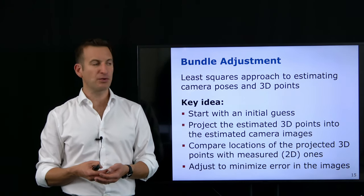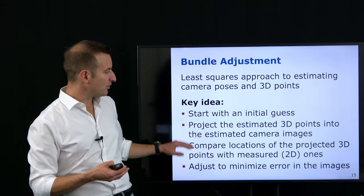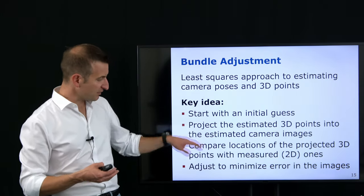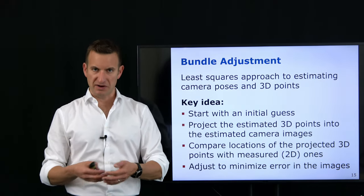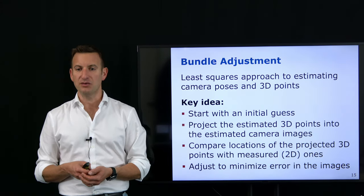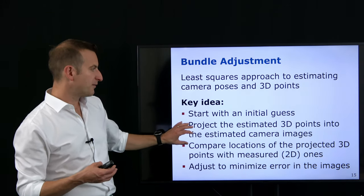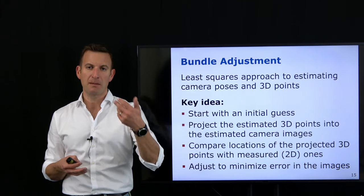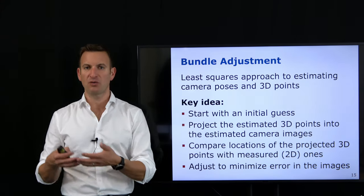I need to iterate this process: I get an update in my unknown parameters, reproject them back, and perform these steps over and over again. Because it's a nonlinear least squares approach, we need to linearize, and as a result we need to iterate. Now I want to look a bit further into this reprojection error — the projection of points from the 3D world into the image plane and the discrepancy between where we think points should end up and where they actually end up.